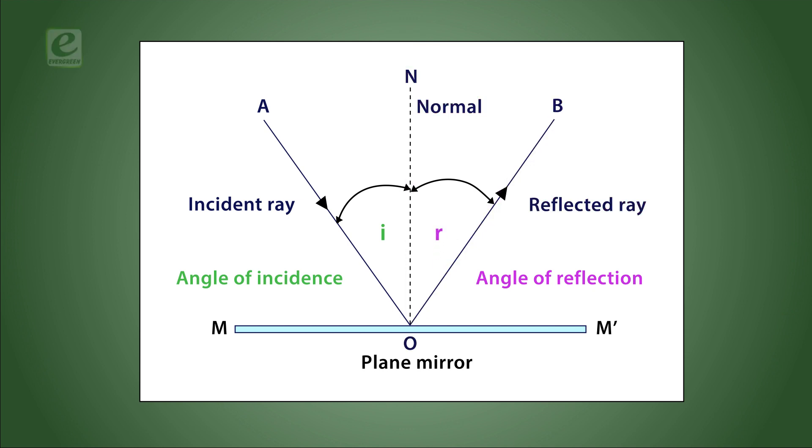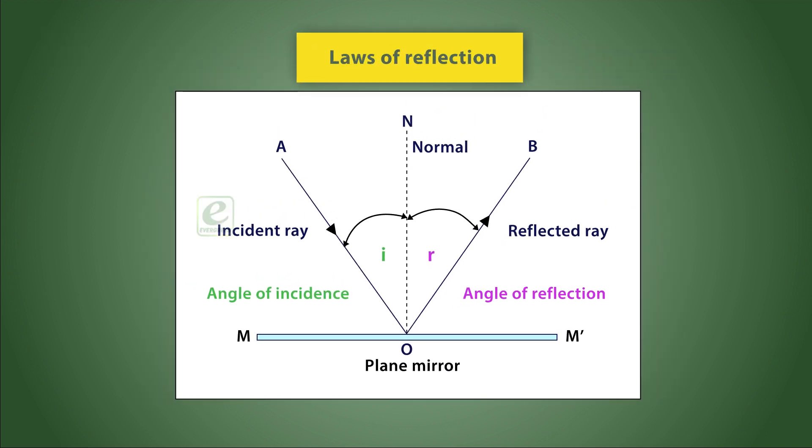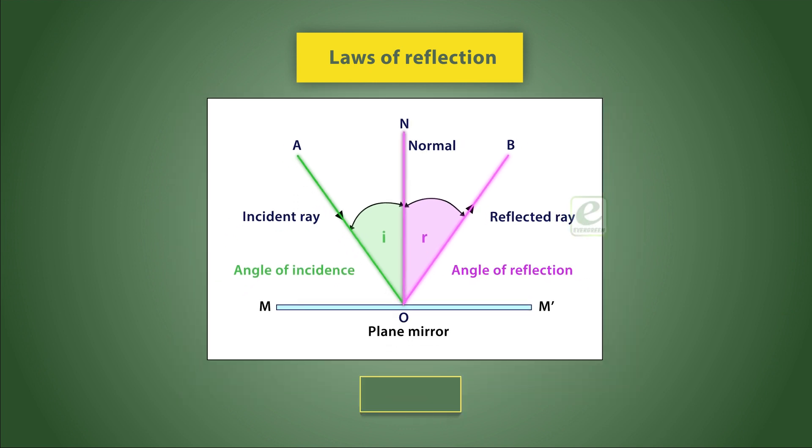The reflection of light from a surface obeys specific laws called laws of reflection. The first law of reflection states that the angle of incidence is always equal to the angle of reflection. This implies that angle i equals angle r.